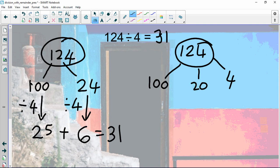So we're going to divide by 2. 100 divided by 2 is 50, 20 divided by 2 is 10, and 4 divided by 2 is 2.